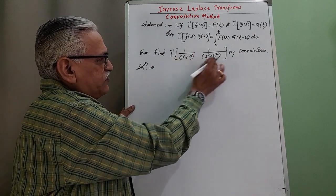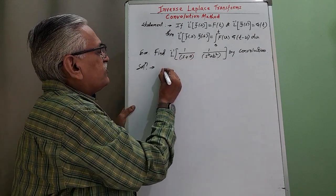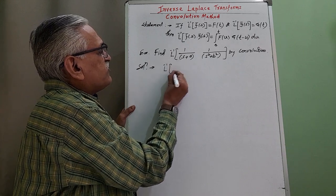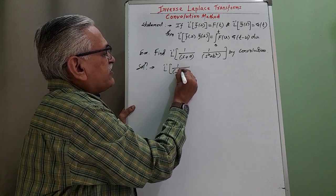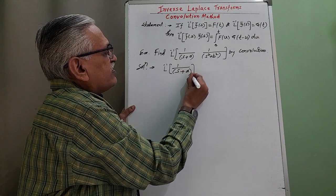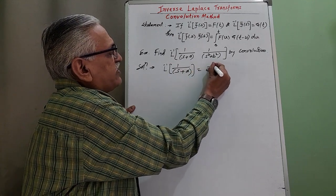We have the inverse of these two terms. The inverse of the first term 1 upon s plus a, standard result e raised to minus at, we call this as f of t.